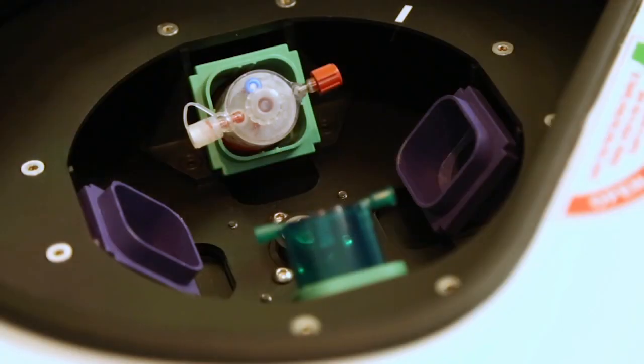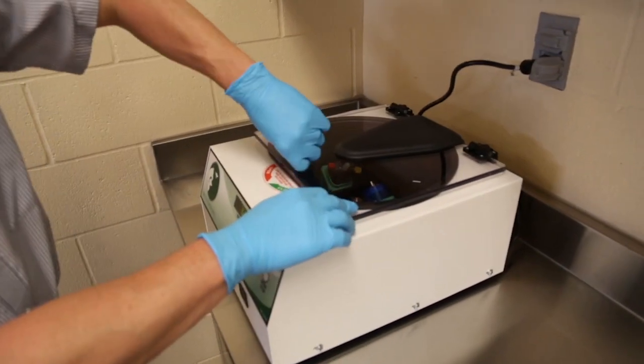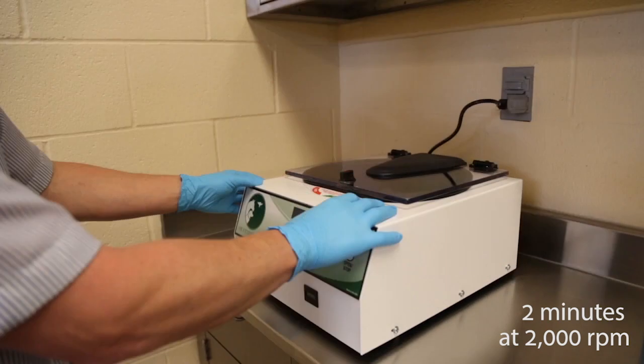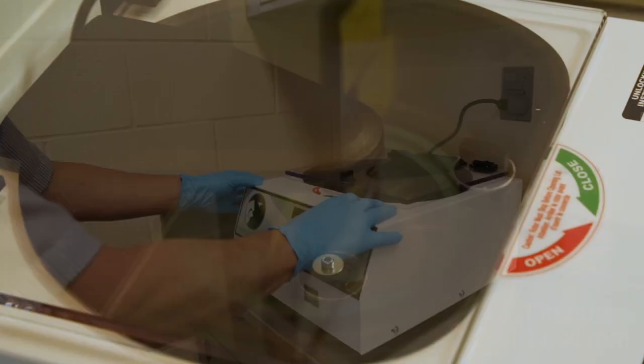Alternatively, if a second ProStride kit is being used, this will serve as the appropriate balance. And again, the green centrifuge buckets must be used with ProStride. As done before, close the lid and secure the latch on top of the centrifuge. Set the RPMs to 2,000 and time to 2 minutes and push the start button.